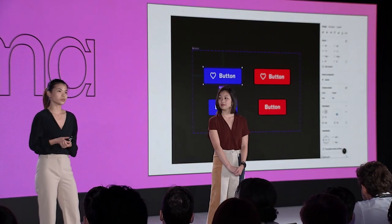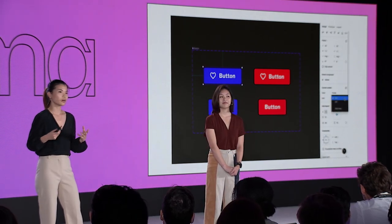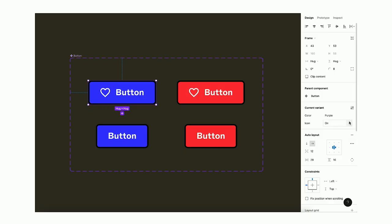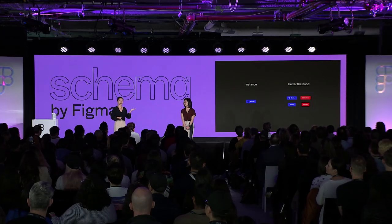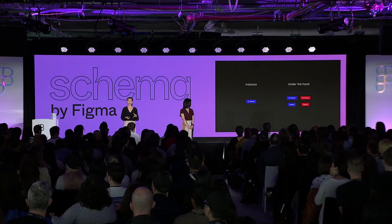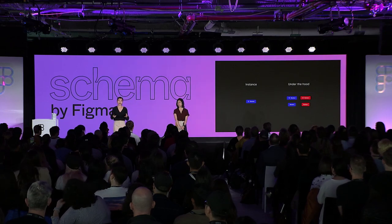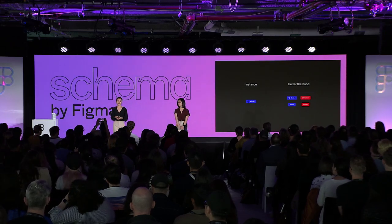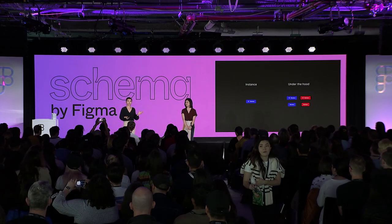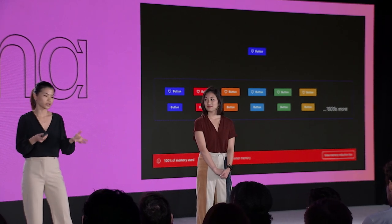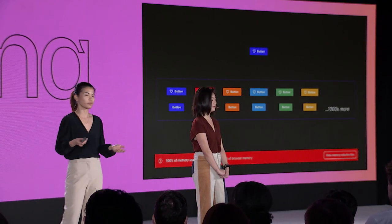It's not just Figma users that variant explosion caused issues for — it also caused a lot of issues for engineers. When you have a variant selected in Figma, we let you easily toggle between different variations without any latency or additional network requests. We're able to do this because for each unique variant instance in a file, we pull in the entire component set. So in the 16k variant example, pulling just one instance will pull in all 16,000 variants, which can cause that dreaded red banner showing you're out of memory.